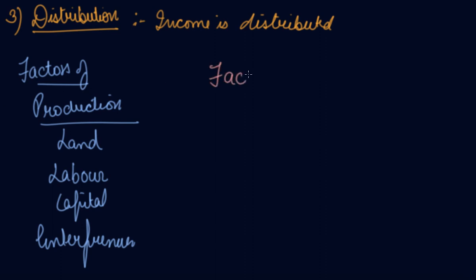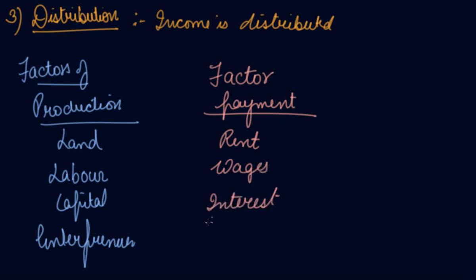Now for these factors of production you need to make some payment, you need to do some expenditure. For land you pay rent, for labor you pay wages, for capital you pay interest, and for entrepreneur you pay profit.